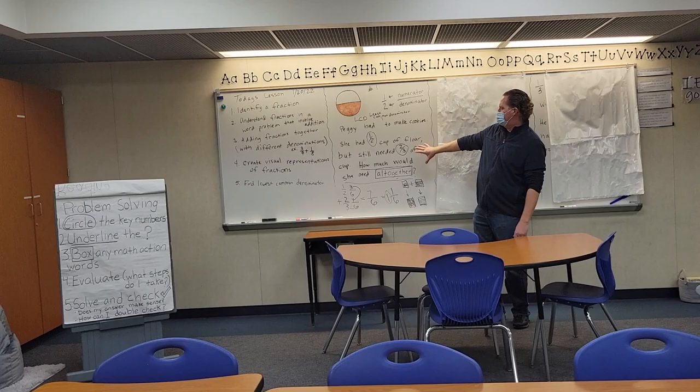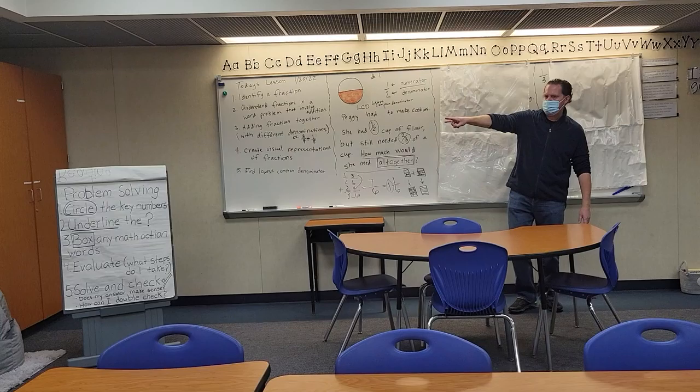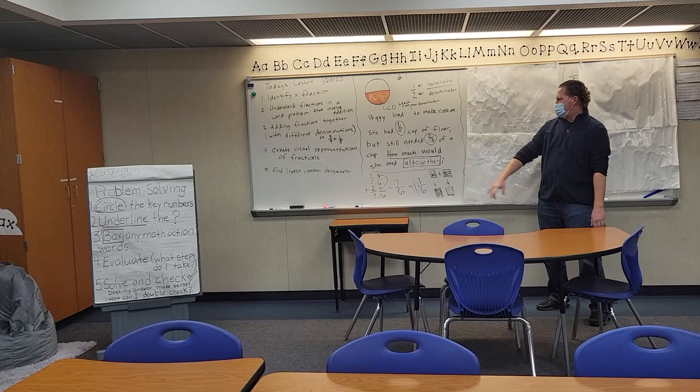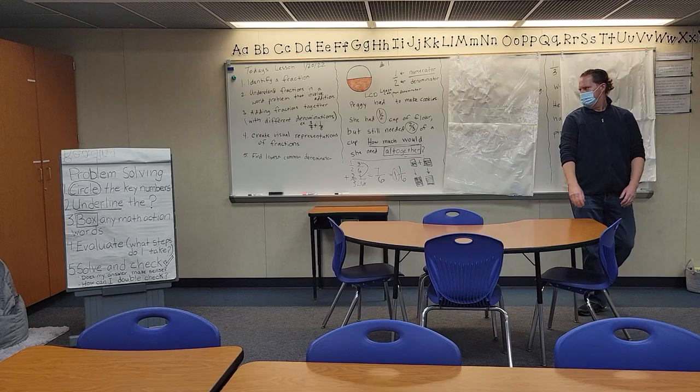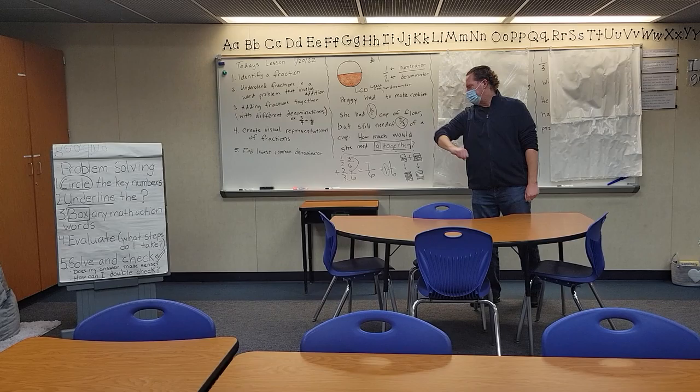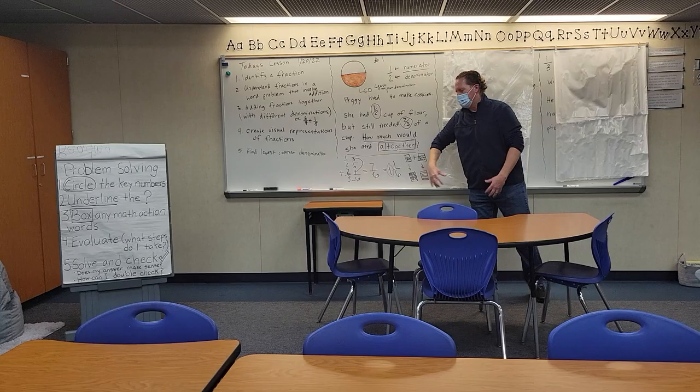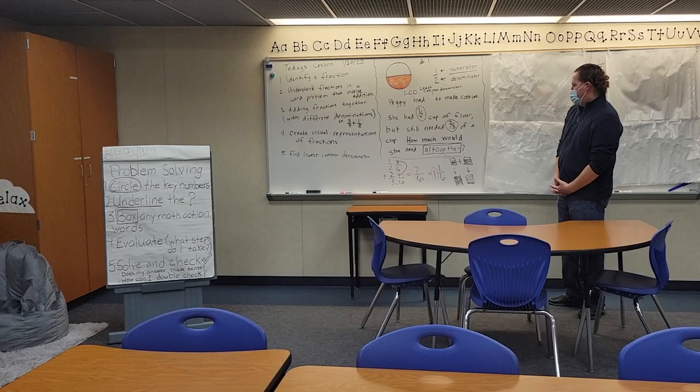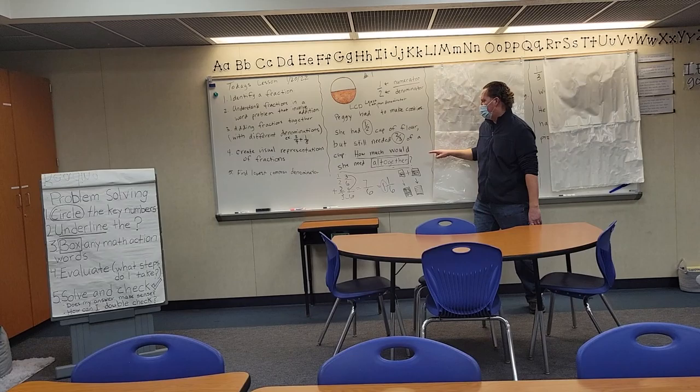Now we're going to talk about our word problem. Let's look at it — I'm going to read it fast, and then we're going to solve it using our steps. Peggy has to make cookies. She has a half cup of flour, and she still needs two-thirds of a cup of flour. How much does she need altogether? I looked at my key numbers and circled my key fractions in the problem — one-half and two-thirds. Then I underlined my question: how much would she need altogether? That's step two done.